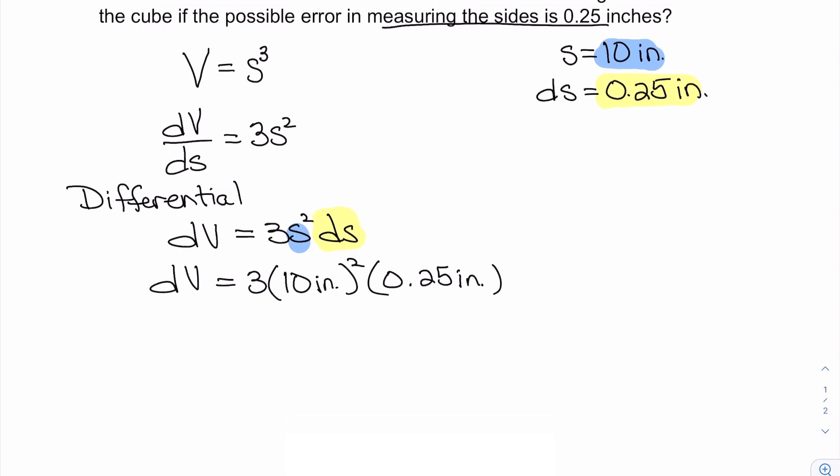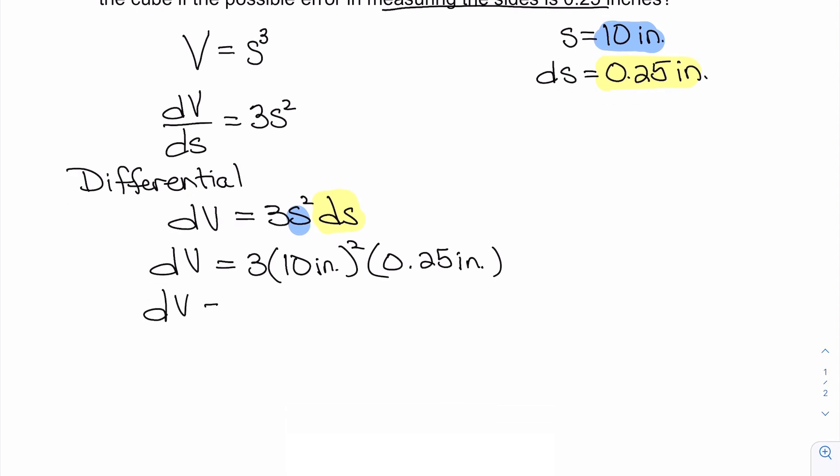Following our order of operations, we have 3 times 100 square inches times 0.25 inches, and that gives us that dV is equal to 75 cubic inches.